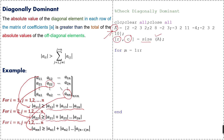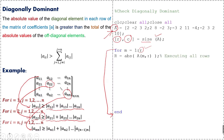Next we use a for loop: for i equal to 1 to r, where r is the number of rows, ending with end. First we take the absolute values of all elements in a row.